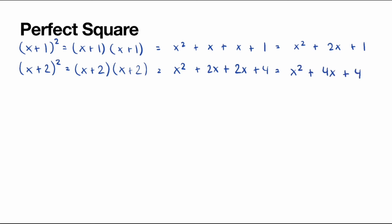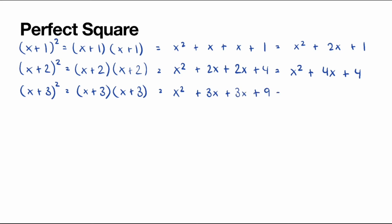Continuing on, x plus 3 squared, which is x plus 3 multiplied by x plus 3. Using the FOIL technique again, we will get x squared plus 3x plus 3x plus 9, which is the same thing as x squared plus 6x plus 9.